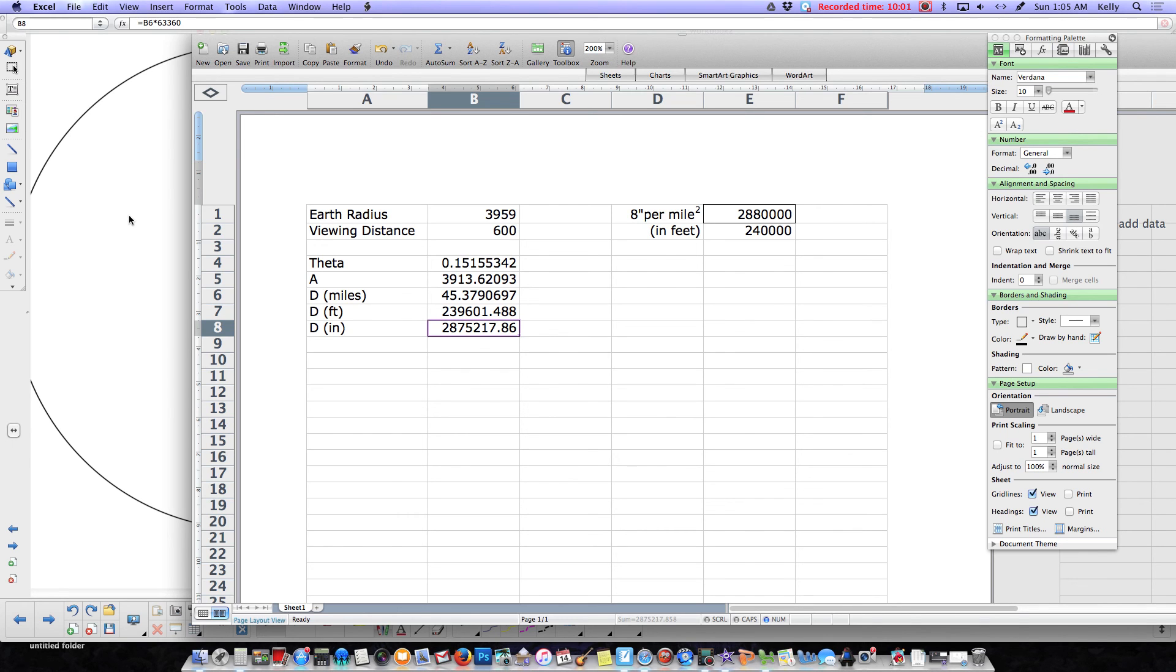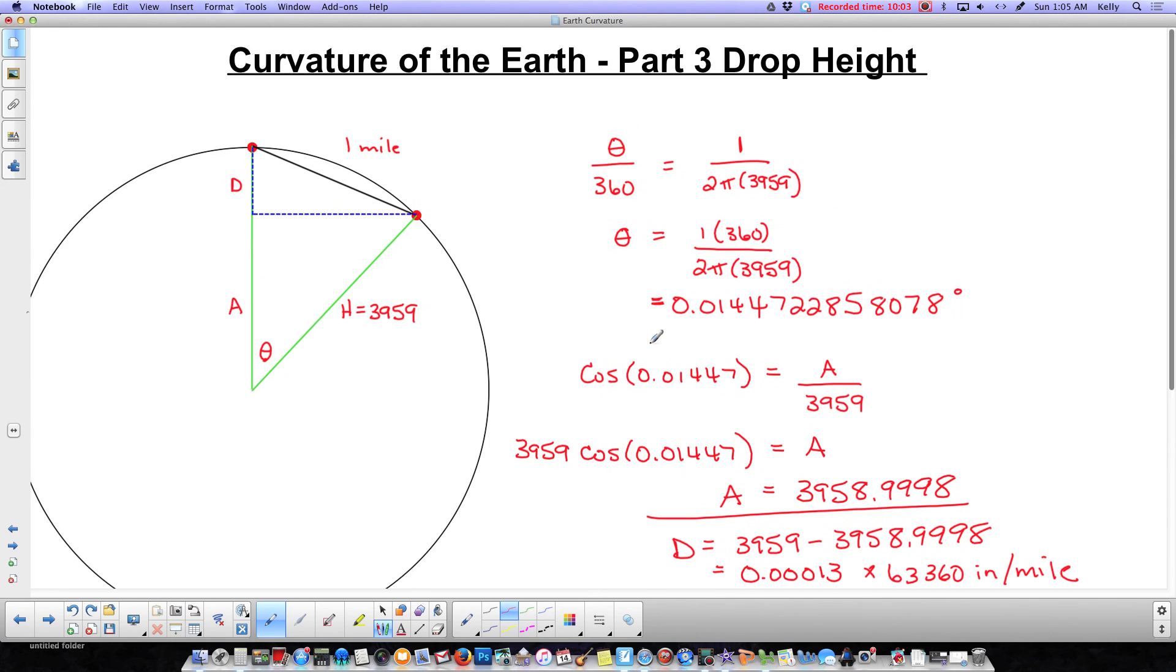So that is drop height, which is what most people calculate, the 8 inches per mile squared. Which really has only a small little bit to do with what we see hidden over the curvature of the Earth. Which is what people, the Flat Earthers, really like to apply that formula to. So I'm just going to leave that one there.